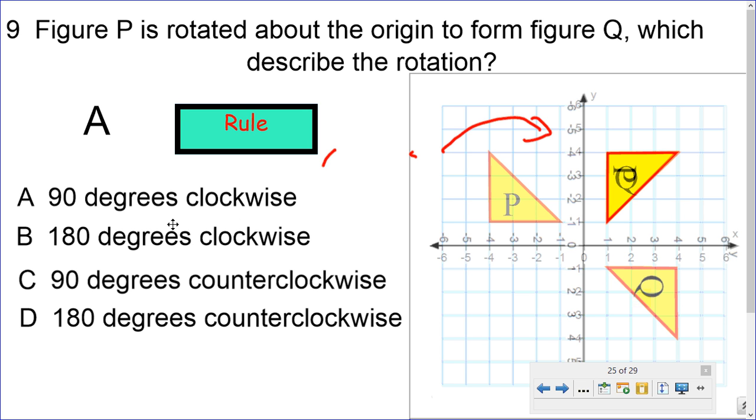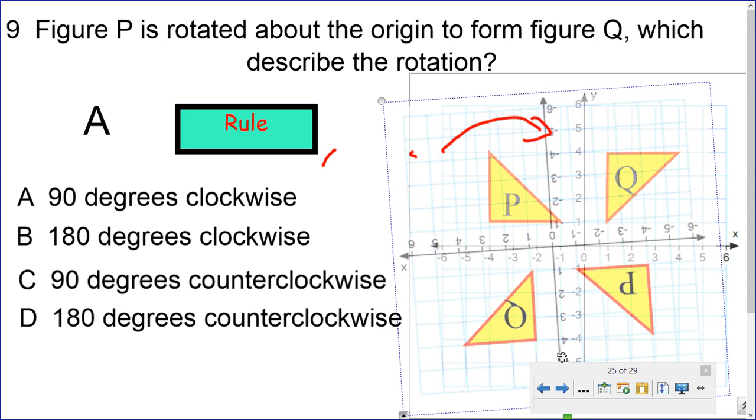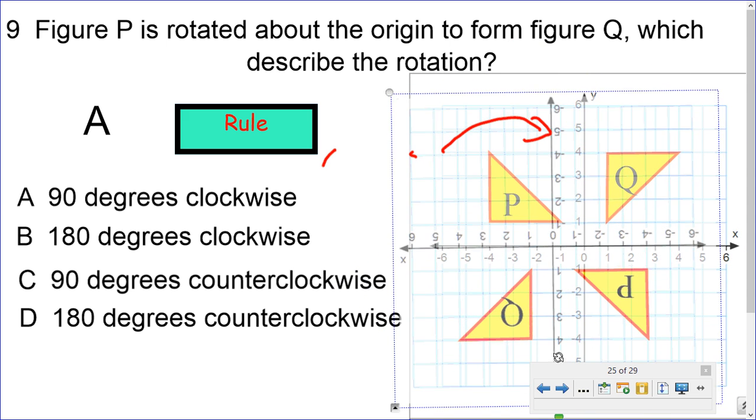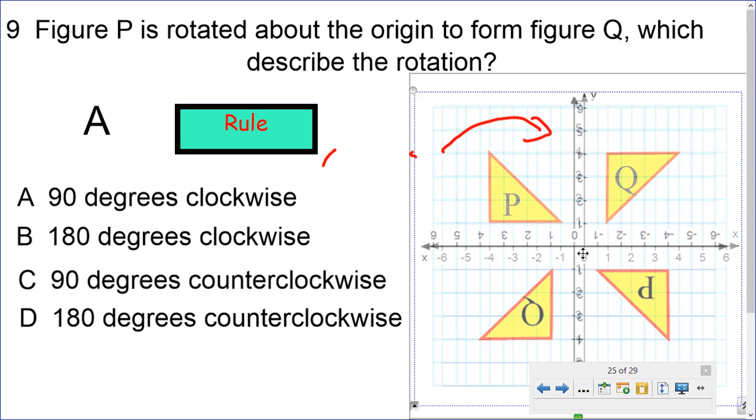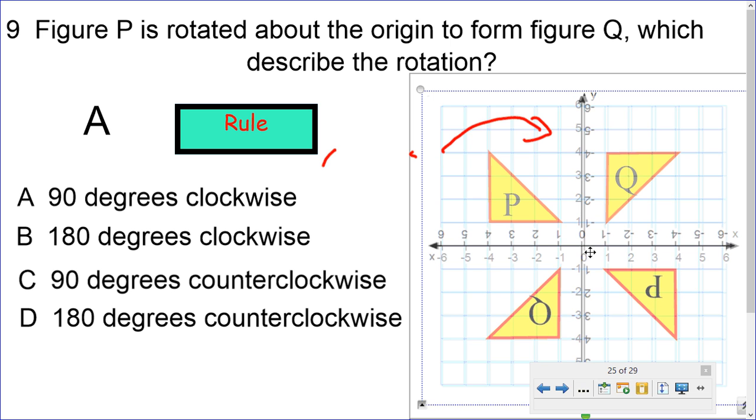Now, since we have the others here, let's just take a look. 180 degrees, let's keep turning that figure. So, let's turn it a little bit more. 180 degrees, that'd be another 90. Figure P would be down here when it was there. Now, it's down there, 180 degrees clockwise.